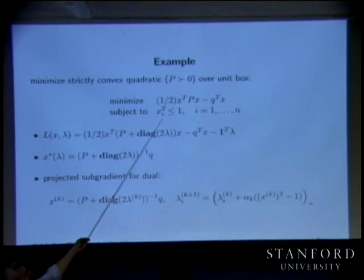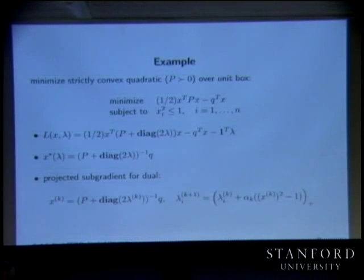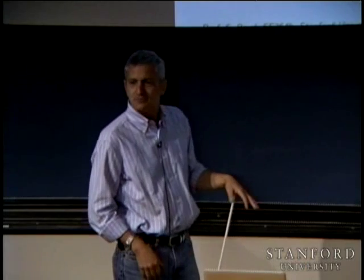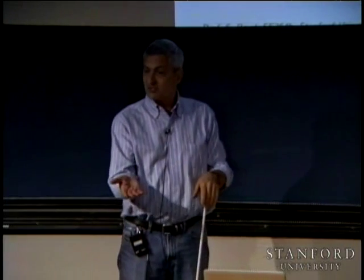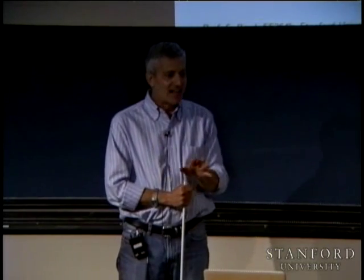This would be so fast with a primal barrier method — it would be insane. There are only special reasons why you'd want to do this; one would be if the dual subgradient method turns out to be decentralized — that would be a compelling argument.